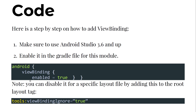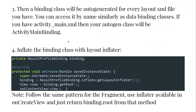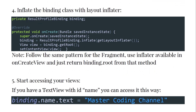If you need view binding, add it to the Gradle module file with android.viewBinding.enabled = true. If you don't need data binding for a specific layout, add tools:viewBindingIgnore="true". A binding class will be auto-generated for every layout XML file. You can access it by name similarly to data binding classes — for activity_main.xml the generated class will be ActivityMainBinding.